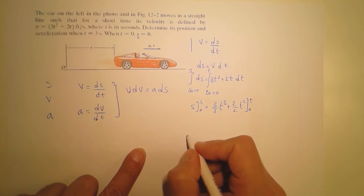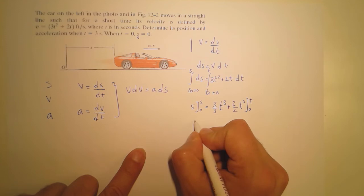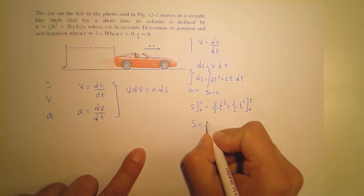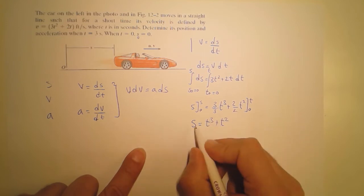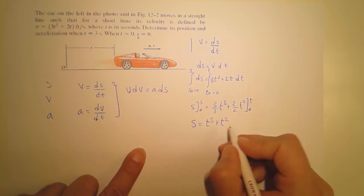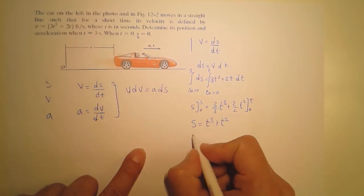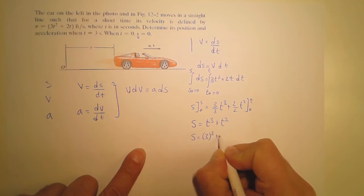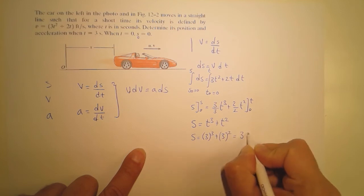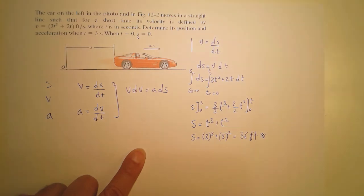Substituting the upper and lower limits gives the relationship between position and time. At t equals three seconds, we substitute: three cubed plus three squared equals 27 plus 9, giving s equals 36 feet. So the position of the car after three seconds is 36 feet.